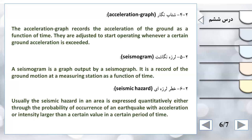خطر لرزه‌ای - Seismic Hazard: Usually the seismic hazard in an area is expressed quantitatively either through the probability of occurrence of an earthquake with acceleration or intensity larger than a certain value in a certain period of time. معمولاً خطر لرزه‌ای در یک ناحیه به صورت کمی بیان می‌شود - درجه احتمال وقوع زلزله‌ای با شتاب یا شدتی بیشتر از مقدار مشخصی که در زمانی اتفاق افتاده.